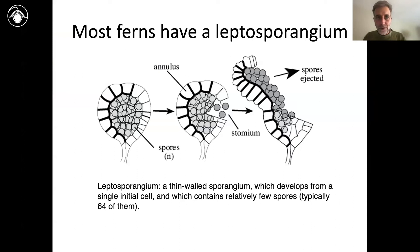Going back again to our reproductive features, I've already introduced you a bit to a leptosporangium. These are thin-walled sporangia. They come from a single initial cell and they usually contain 64 spores — they don't contain very many spores, and they look kind of like this.